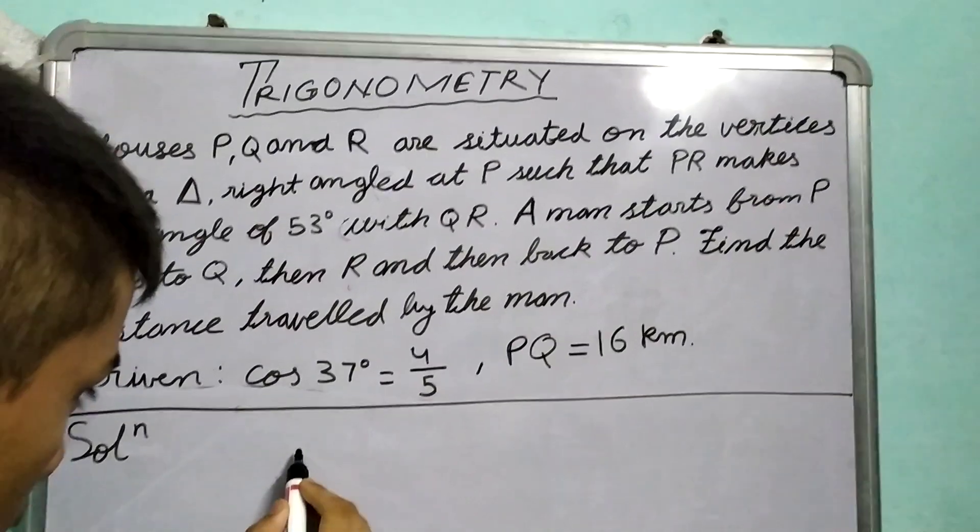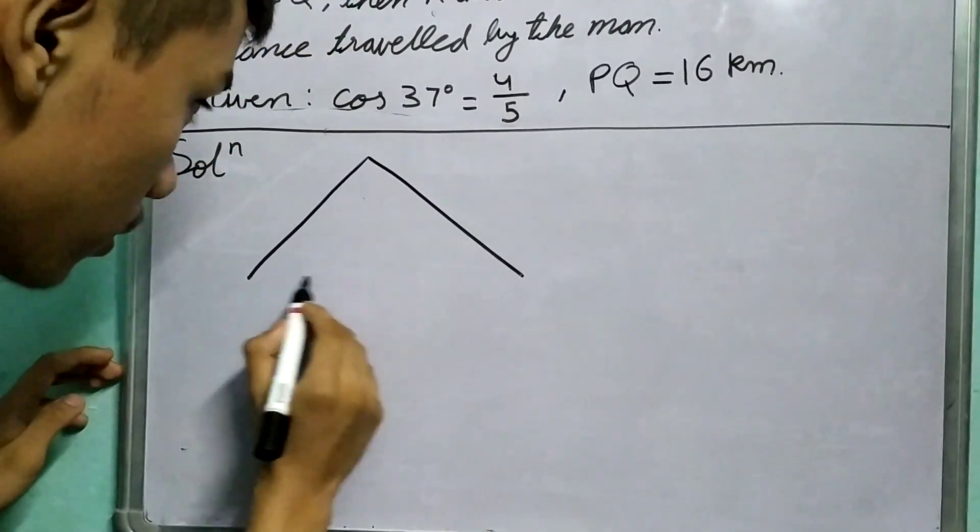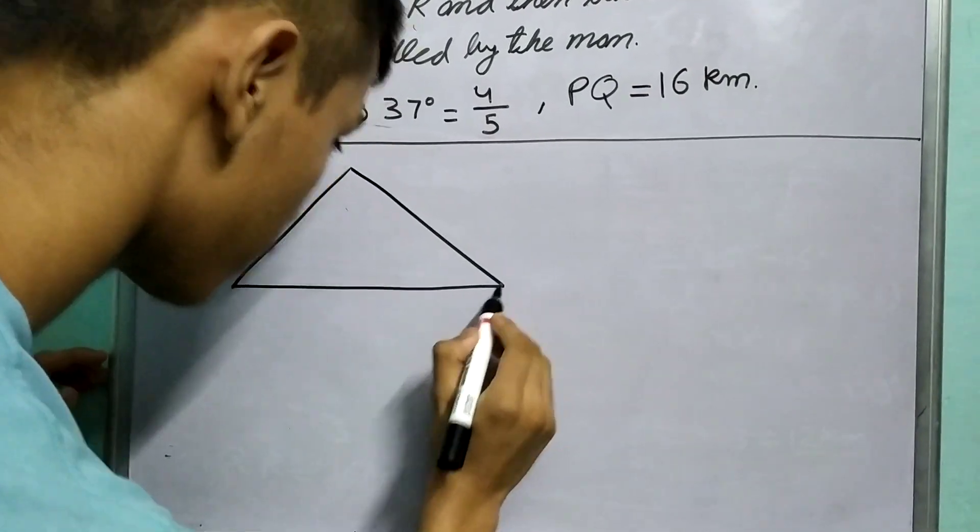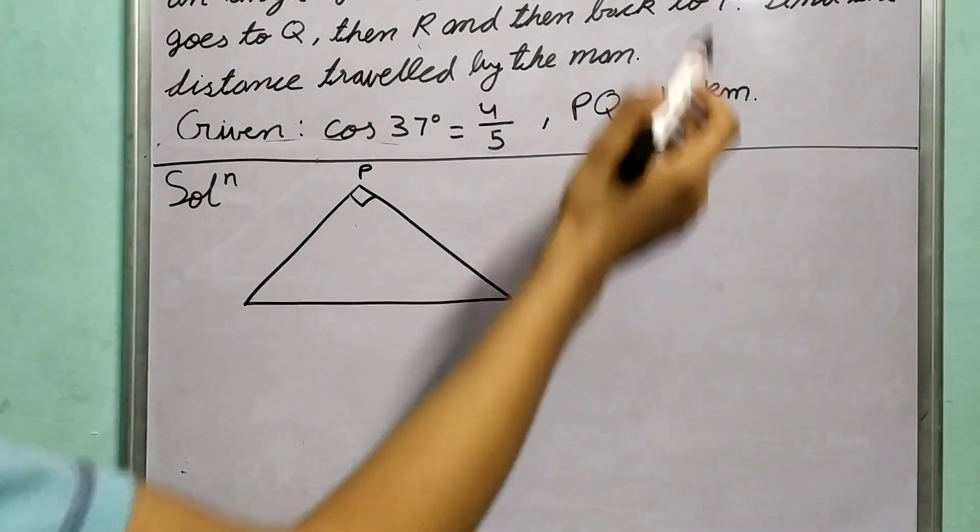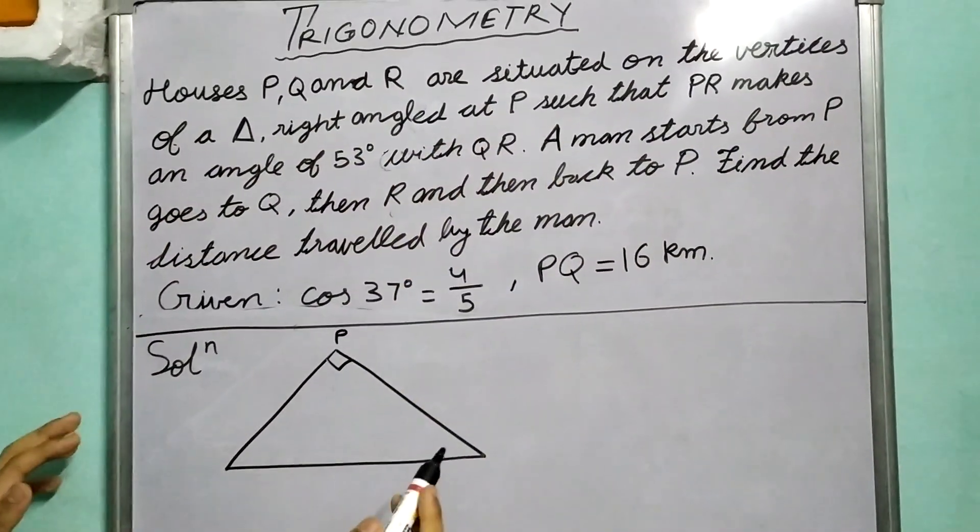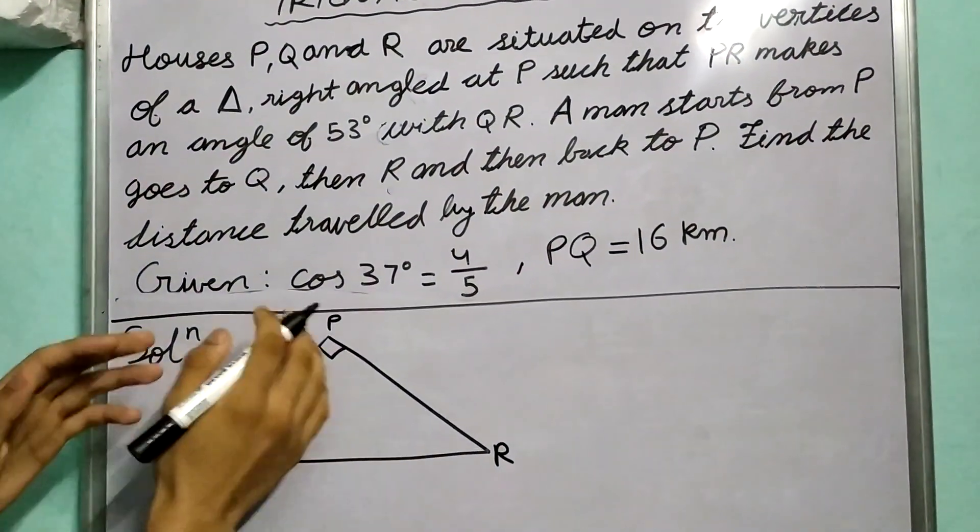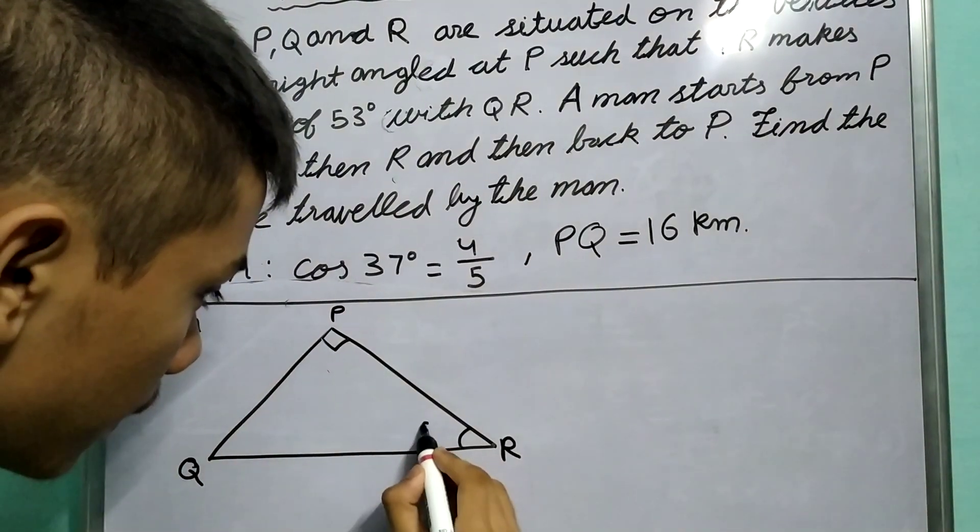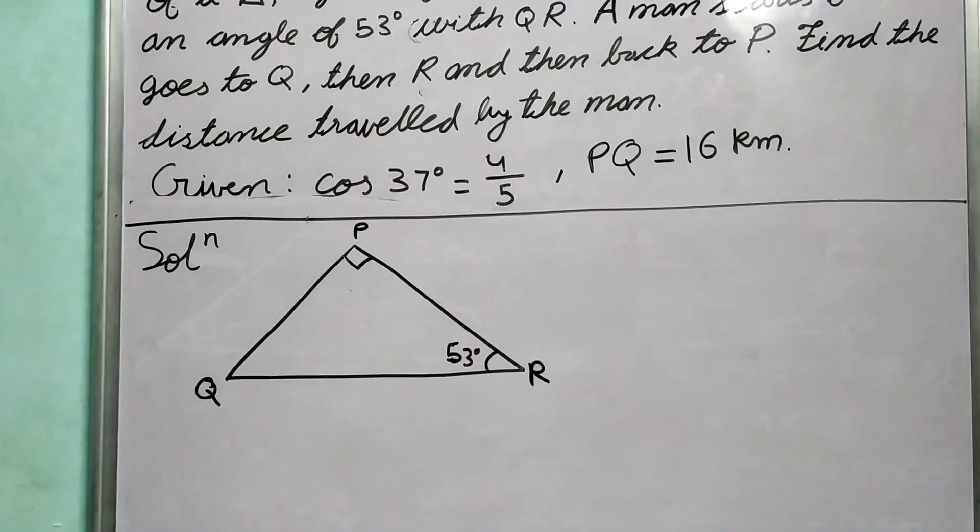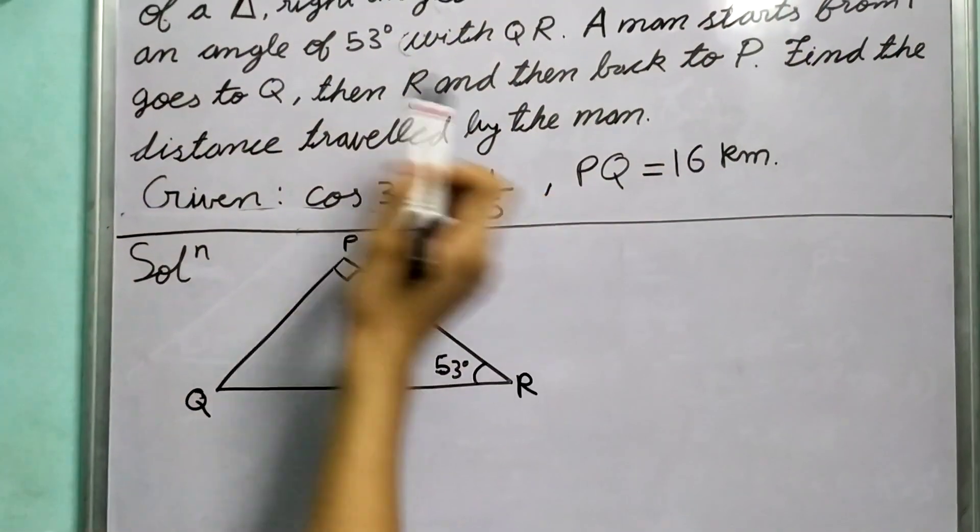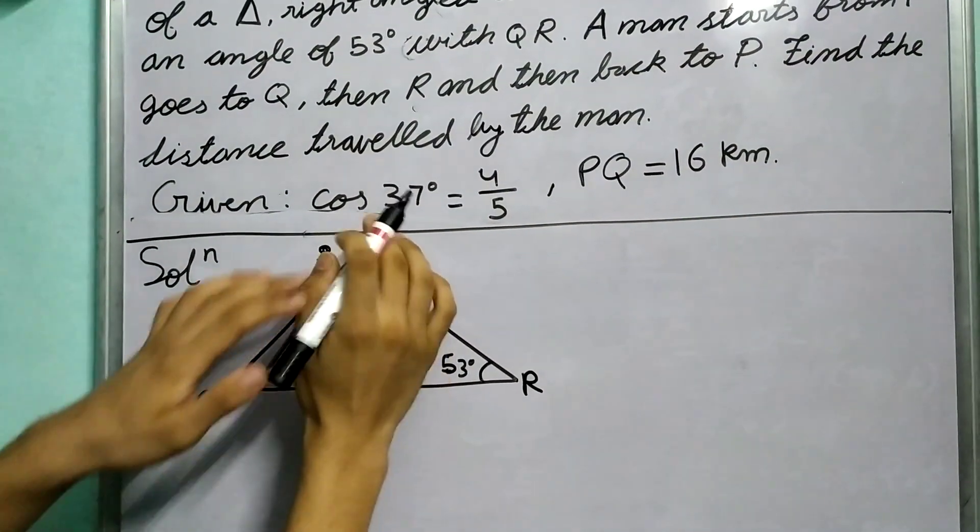Let's draw the diagram. The triangle is right-angled at P, so let me draw this. This is R, this is Q, and PR makes an angle of 53° with QR. This condition is satisfied.